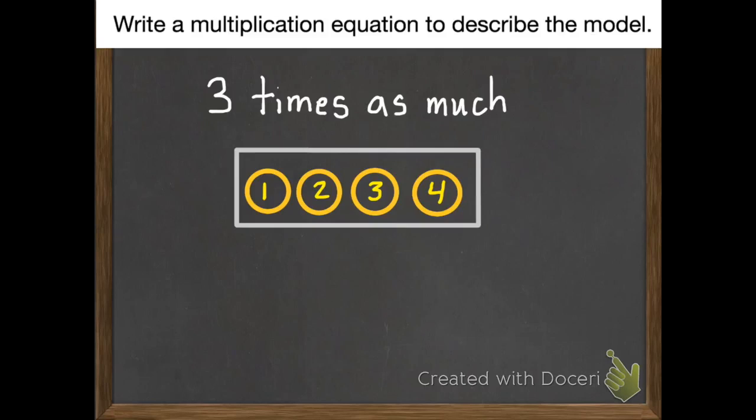So my multiplication equation is going to be three times as much as four circles. An equation has an equal sign. And then we need to solve it. So three times four is twelve. It's as simple as that.